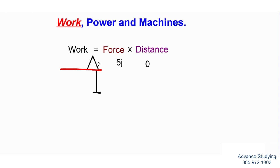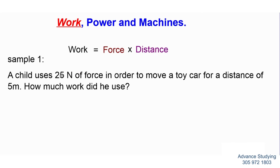Once I begin to move the object using force, then I am doing work again. As long as the object is not moving, although I am using force, the distance is still 0 — the object is stationary, therefore the work is 0. Let's do some sample questions. Sample 1 says: a child uses 25 newtons of force in order to move a toy car for a distance of 5 meters. How much work did he use?